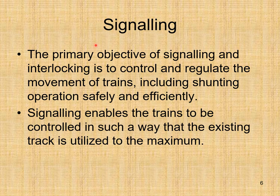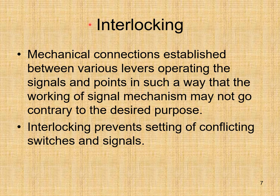The primary objective of signaling and interlocking is to control and regulate the movement of trains, including shunting operations, safely and efficiently. Signaling enables the train to be controlled so that existing track is utilized to the maximum. Interlocking establishes mechanical connections between various levers operating signals and points so that the working of the signal mechanism does not go contrary to the desired purpose. Interlocking prevents setting of conflicting switches and signals.